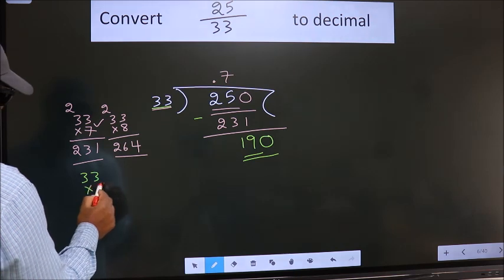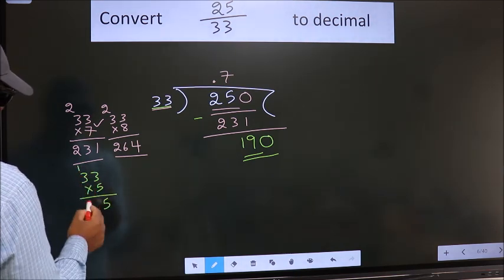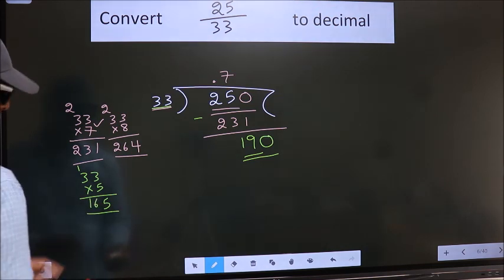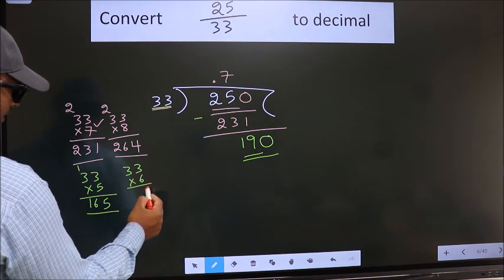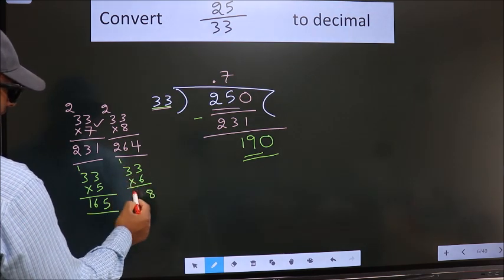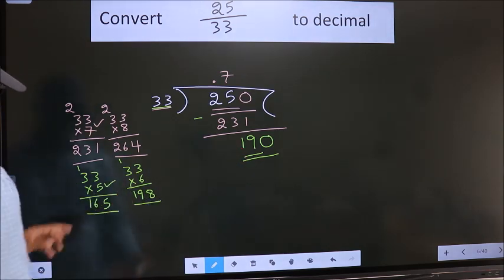33 into 5: 5 times 3 is 15, 5 times 3 is 15 plus 1 is 16. What if we take 6? 6 times 3 is 18, 6 times 3 is 18 plus 1 is 19. This is exceeding, so we should go with 5.